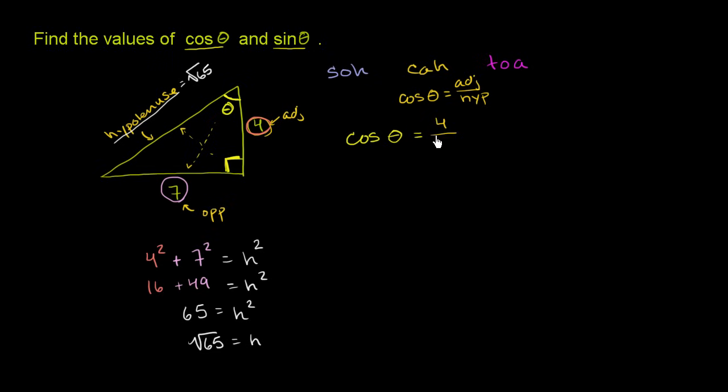So in this case, cosine of theta is equal to the adjacent side, which has length 4, over the hypotenuse, which has length square root of 65.